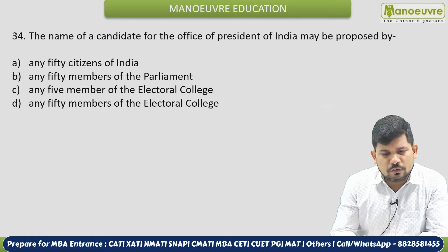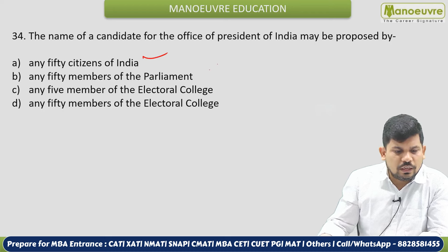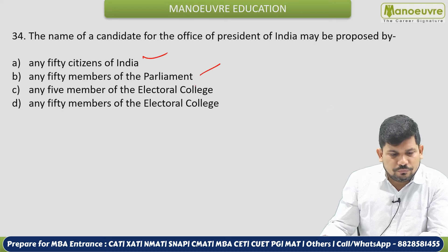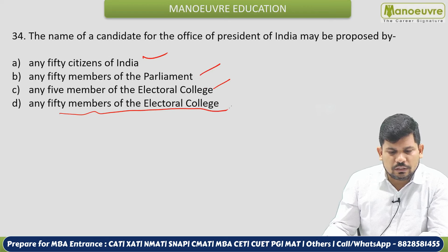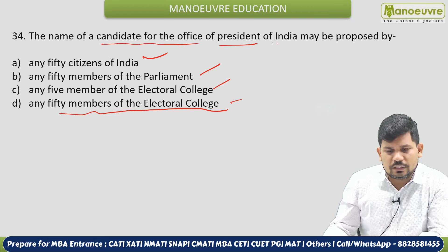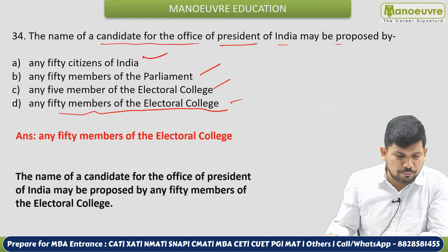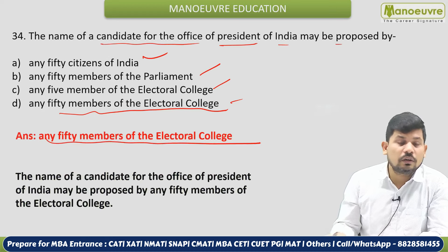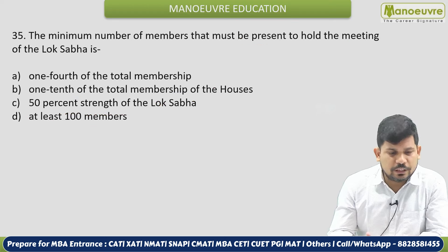Next: A candidate for the office of President of India may be proposed by whom? The name of the candidate for the President of India may be proposed by a member of the electoral college — or any 50 members of the electoral college. So the minimum number of members required to propose a presidential candidate is 50. This is a very important and expected question.